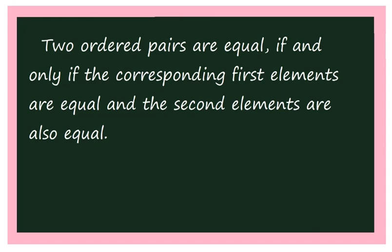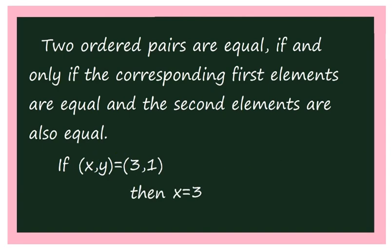Now remember this result: two ordered pairs are equal if and only if their corresponding first elements are equal and their corresponding second elements are equal. For example, if (x, y) = (3, 1), this implies x = 3 and y = 1.